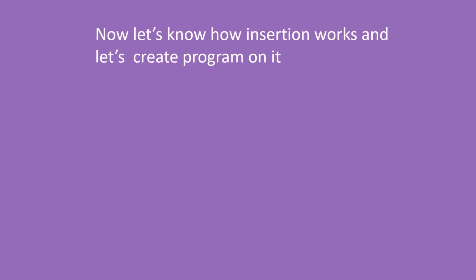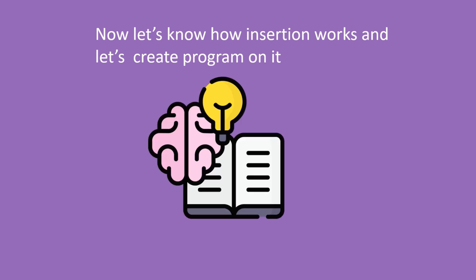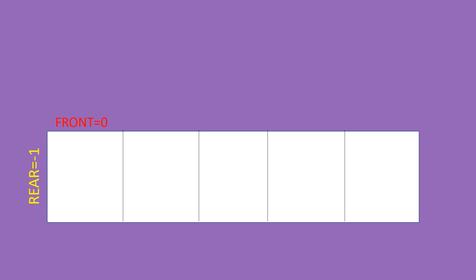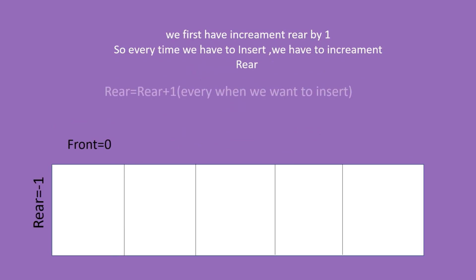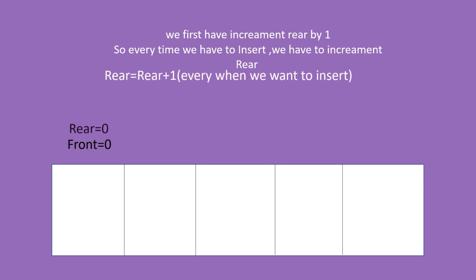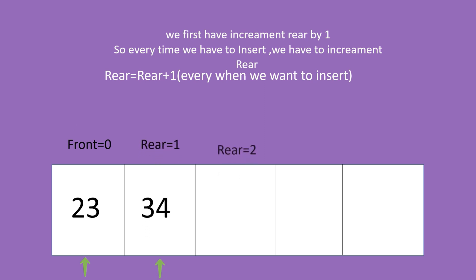Now let's see how insertion works and create a program for it. We need two variables for enqueue: front and rear, where initially front equals zero and rear equals minus one. Every time we try to insert an item, we have to increment rear by one. So let's increment rear by one and insert a random number. To insert additional items, we increment rear and insert each time.